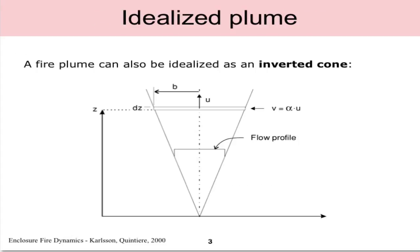With those basic definitions we can also look at the idealized fire plume where the plume itself can be viewed as an inverted cone where at the bottom here we have a point source fire at the floor and as we travel upwards the cone expands.